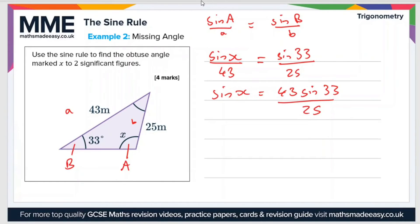To get X on its own now, we need to do the inverse sine function on this right-hand side. The inverse sine, we write as sine to the minus 1, and then the expression is sine 43, sine 33, divided by 25.